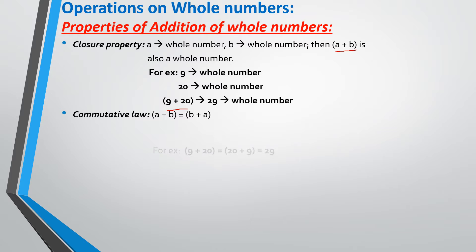Commutative property: when I add in a particular order and if I change the order, the answer is going to be the same. For example, I am adding 9 plus 20 and I get the answer as 29. Similarly, when I change the order and add it as 20 plus 9, still my answer is going to be the same. This is known as commutative property.